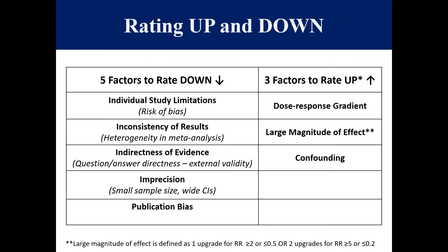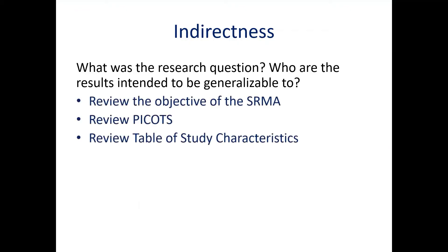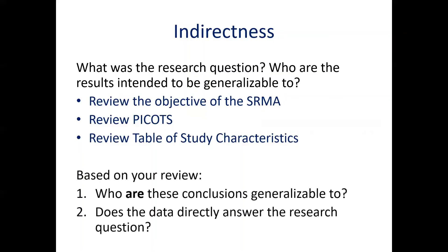The next factor to assess is indirectness of the evidence, which is considering whether the included studies can directly answer the research question. Some questions to consider are: what was the research question of the SRMA, and who are the results intended to be generalizable to? To help answer these questions, review the objective of the SRMA and look at the PICOTS definition — that is, the population, intervention, comparator, outcome, time of follow-up, and setting of the included trials. Also review the table of study characteristics to see a general overview of the study population included and other important factors.